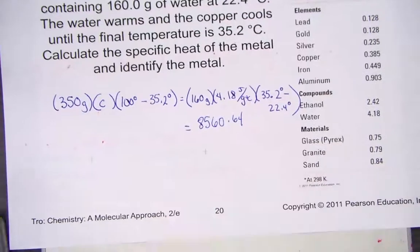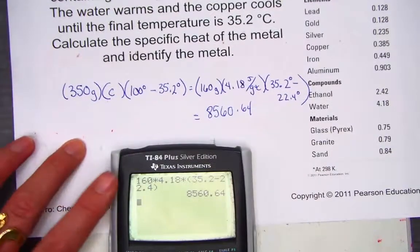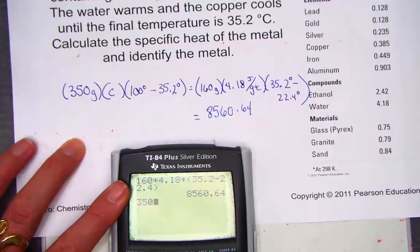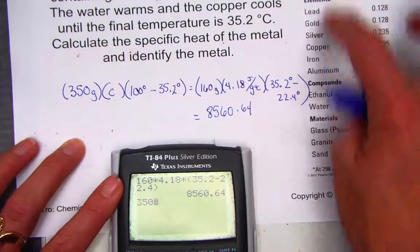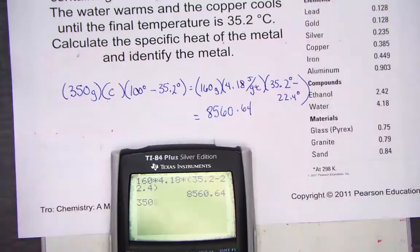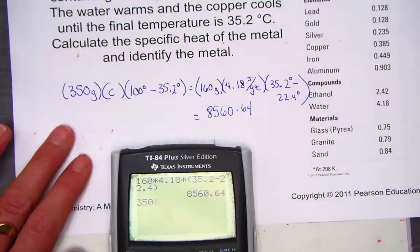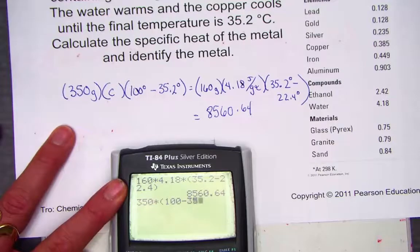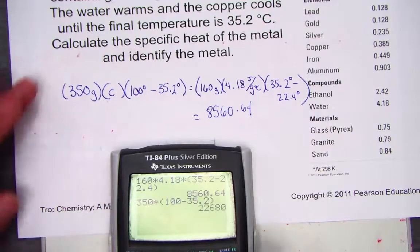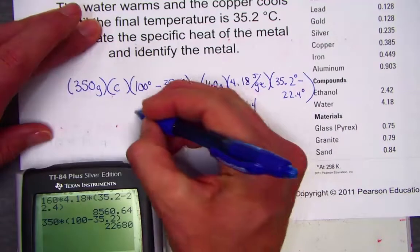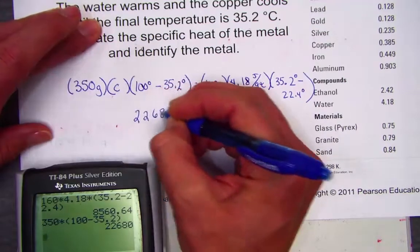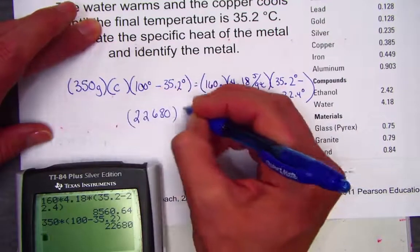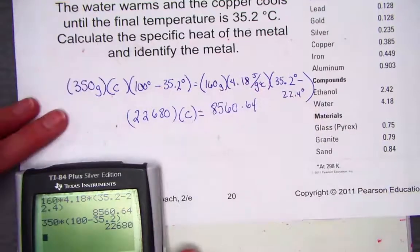I'll simplify what we can on the left side of the equation. The 350 grams of aluminum, or excuse me, of copper—no, we don't know what it is, I'm sorry, that's what we're trying to solve. Whatever metal it might be, we have 350 grams. I'll multiply that by the change in temperature, which is the difference between 100 and 35.2, and that value is 22,680. Remember that's still multiplied by the specific heat constant, the ultimate target variable.